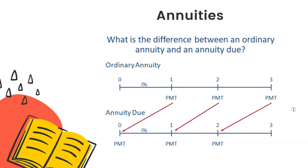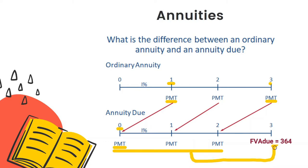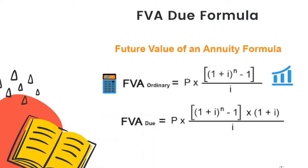Under ordinary annuity, the first deposit of 100 dollars occurs at the end of year one, and the last 100 is deposited at the end of year three — that's why you get 331 dollars. For annuity due, you deposit 100 dollars right now, so the series earns interest one more period, resulting in 364 dollars at the end of year three. That's why we multiply (1 + i) into the ordinary annuity FVA formula.